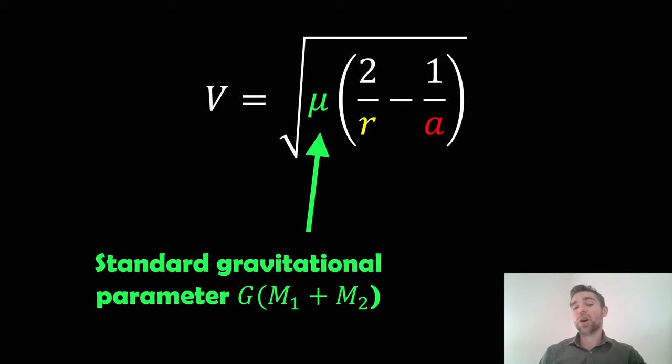Although again, like I mentioned before, if m2, the second mass like the planet mass or Earth mass, is generally considerably less than the first primary mass. A lot of the time we can neglect this and it makes no difference, so it might just be GM.